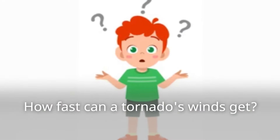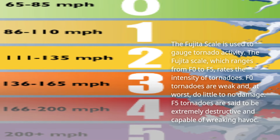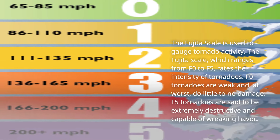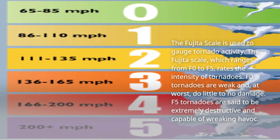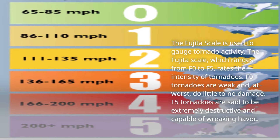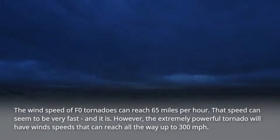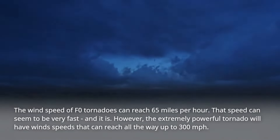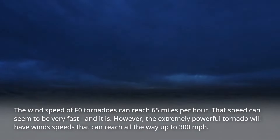How fast can a tornado's winds get? The Fujita scale is used to gauge tornado activity. The Fujita scale, which ranges from F0 to F5, rates the intensity of tornadoes. F0 tornadoes are weak and, at worst, do little to no damage. F5 tornadoes are said to be extremely destructive and capable of wreaking havoc. The wind speed of F0 tornadoes can reach 65 miles per hour. However, the extremely powerful tornado will have wind speeds that can reach all the way up to 300 miles per hour.